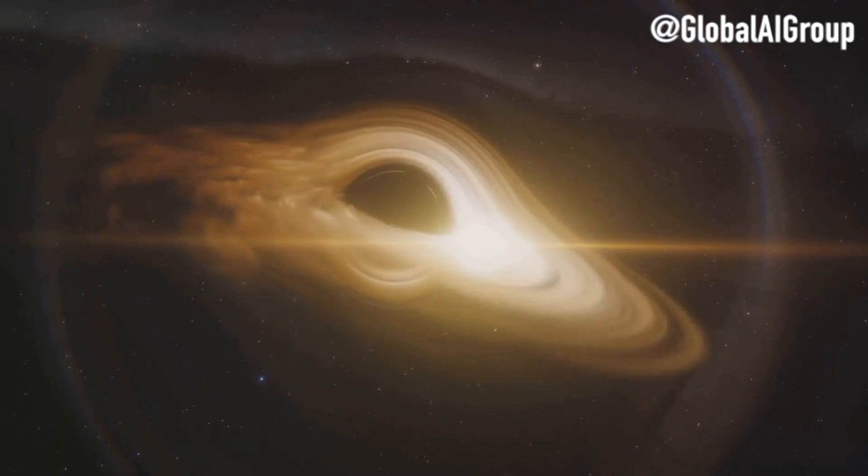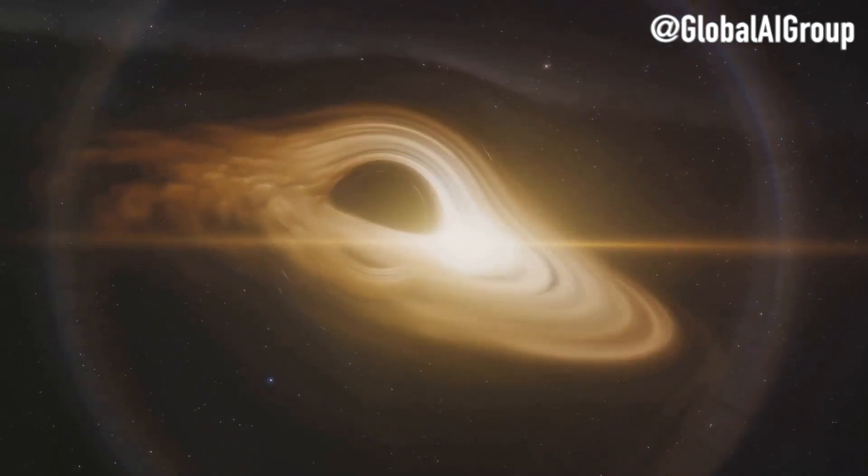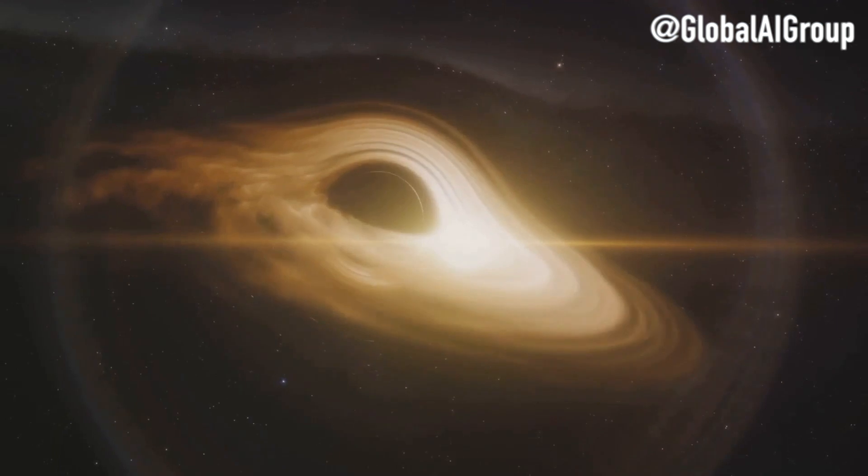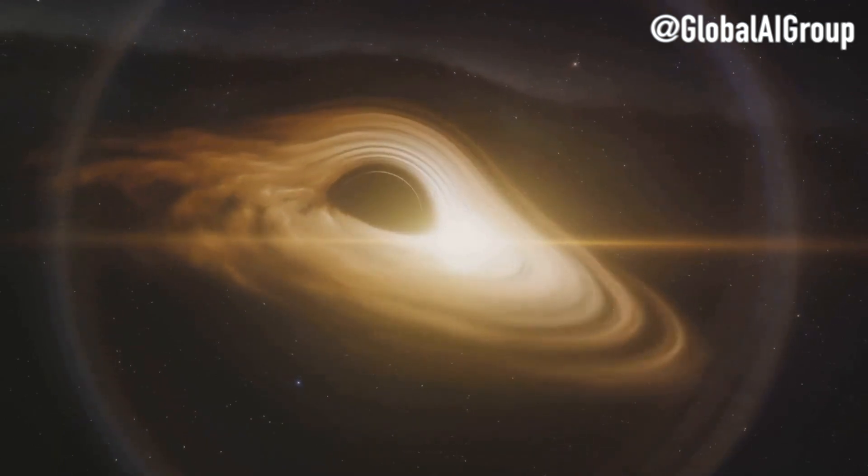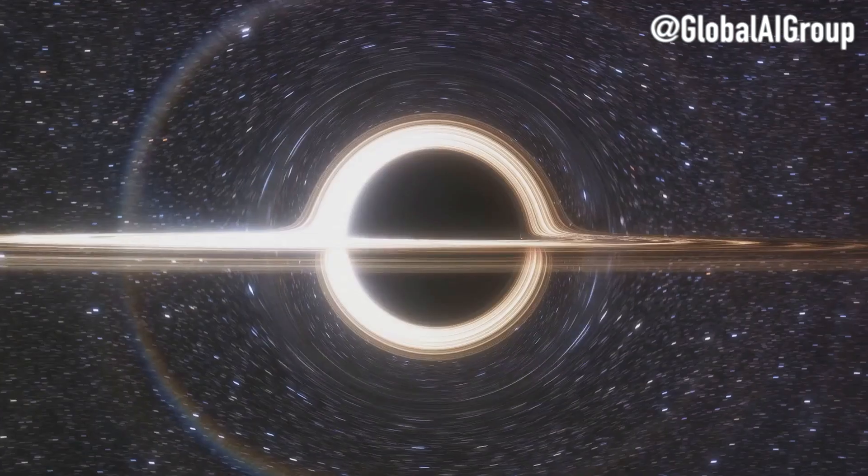Let's break it down. When a massive star collapses under its own gravity, it can form a black hole, an entity with gravity so strong that nothing, not even light, can escape it.